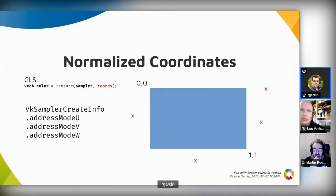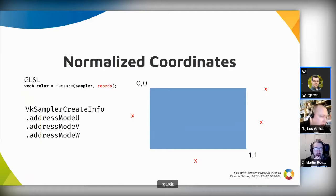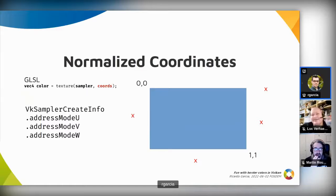Focusing on the coordinates used to sample from the image: the most common case is using normalized coordinates, which means using floating point values between zero and one in each of the image axes. But what happens if the coordinates fall outside that range — not between zero and one? That means we would be sampling outside the original image at points around it, like the red marks shown. What happens depends on how the sampler is configured.